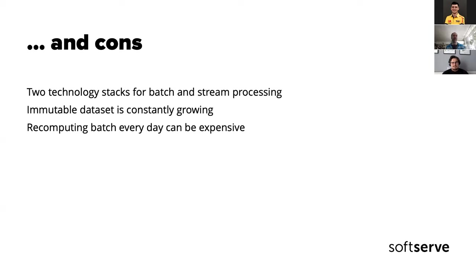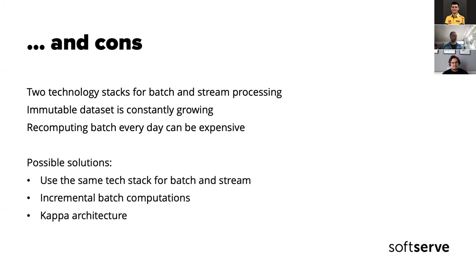You may want to consider additional incremental batch processing at some point, then recomputing the batch. Possible solutions: use the same tech stack, use incremental batch computations, or consider that Lambda is not always the best architecture. One of the first alternatives is Kappa Architecture, which is a pure stream approach that also covers an immutable dataset. If it needs to recompute something it puts the immutable data back into the stream, but you have just one technology stack.